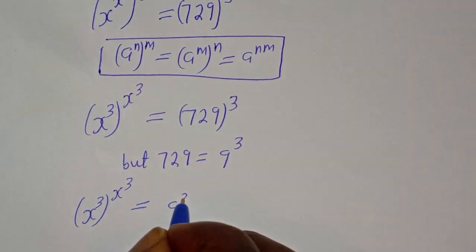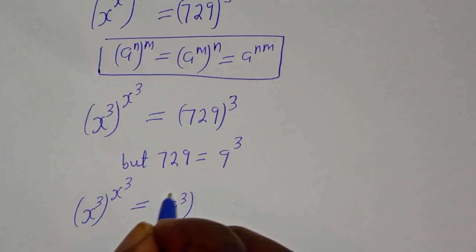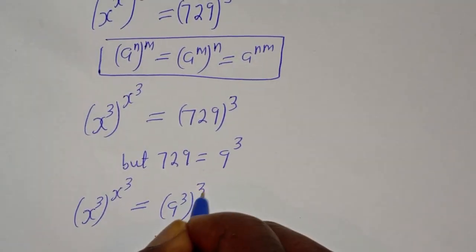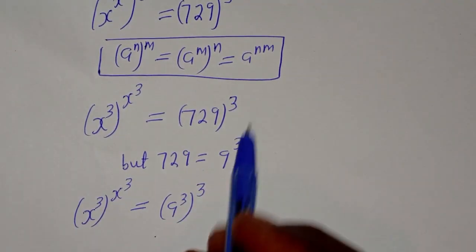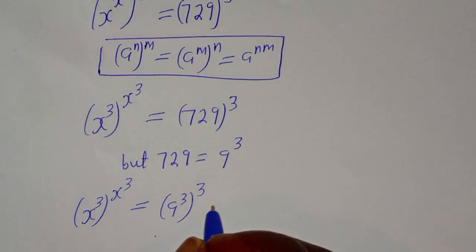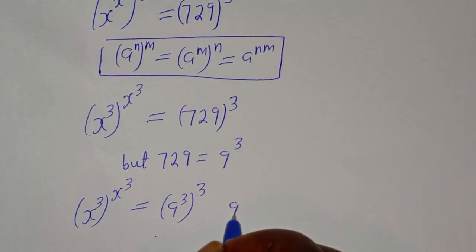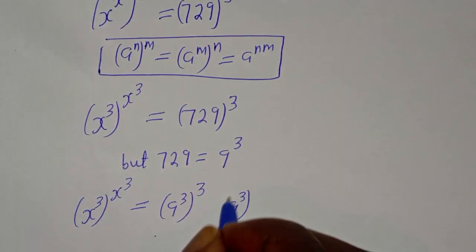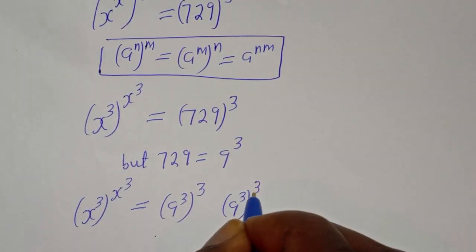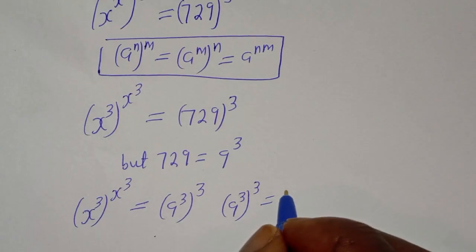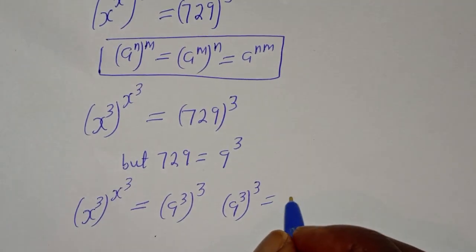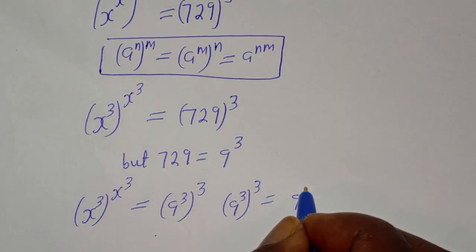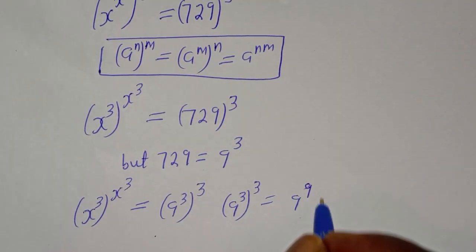Now, 729 is equal to 9 raised to the power of 3. So the right side becomes 9 raised to the power of 3, to the power of 3. Applying the same exponential rule, this equals 9 raised to the power of 9.